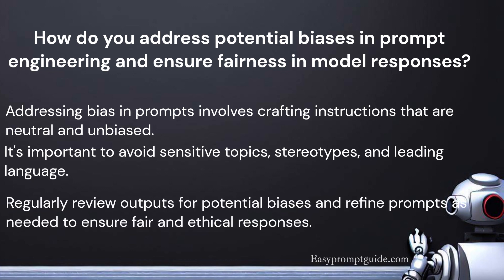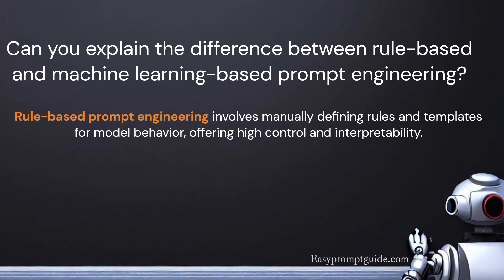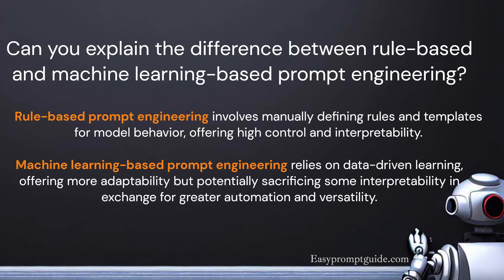Regularly review outputs for potential biases and refine prompts as needed to ensure fair and ethical responses. Can you explain the difference between rule-based and machine learning-based prompt engineering? Rule-based prompt engineering involves manually defining rules and templates for model behavior, offering high control and interpretability. In contrast, machine learning-based prompt engineering relies on data-driven learning, offering more adaptability but potentially sacrificing some interpretability in exchange for greater automation and versatility. The choice depends on the specific requirements of the task and the trade-offs between control and flexibility.